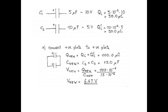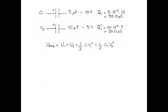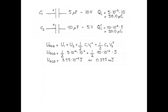To calculate the amount of energy we had at the beginning of the problem, we add the potential energies initially stored on the two capacitors: ½C₁V₁² plus ½C₂V₂². That's ½ times 5 microfarads times 10 volts squared, plus ½ times 10 microfarads times 5 volts squared. We get 3.75 times 10 to the negative 4 joules, or 0.375 millijoules.